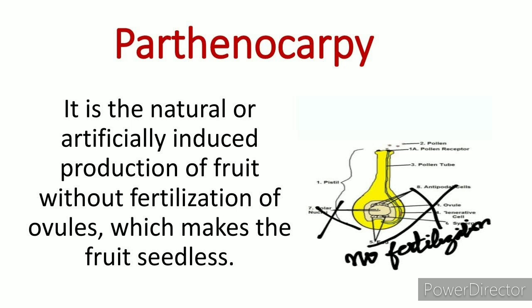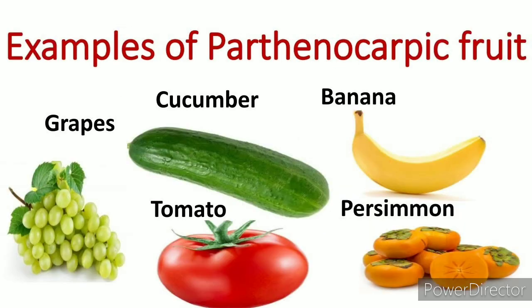Some hormones like auxins and gibberellins support parthenocarpy. Examples of parthenocarpic fruits are grapes, cucumber, banana, and persimmon. These are all seedless fruits and they are very much commercial in nature.